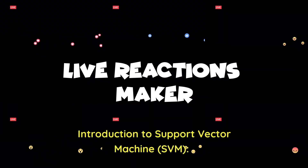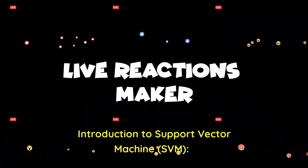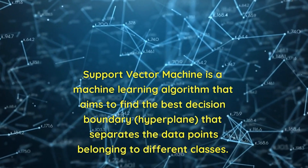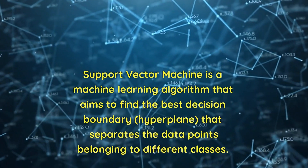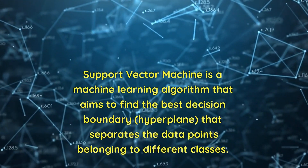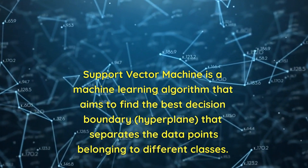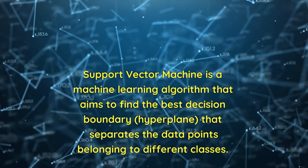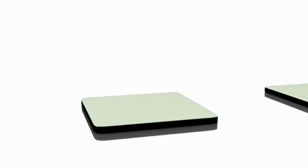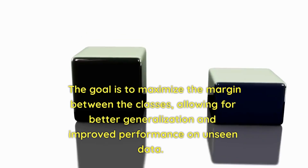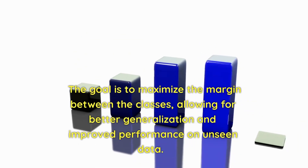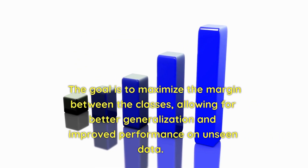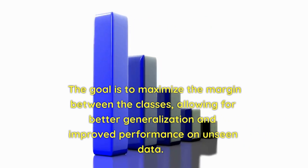Introduction to Support Vector Machine. SVM is a machine learning algorithm that aims to find the best decision boundary, called a hyperplane, that separates the data points belonging to different classes. The goal is to maximize the margin between the classes, allowing for better generalization and improved performance on unseen data.